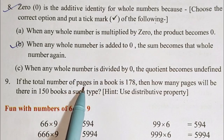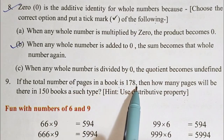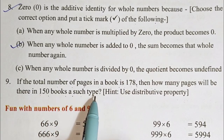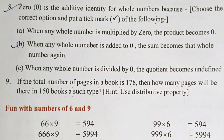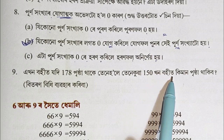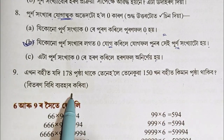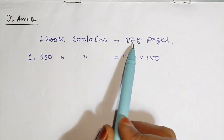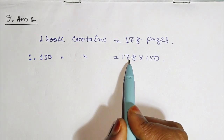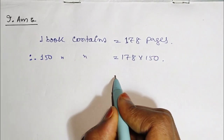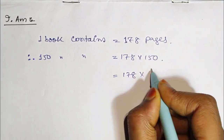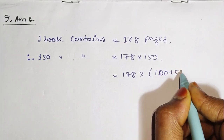Word problem: If the total number of pages in a book is 178, then how many pages will there be in 150 books? We need to find the total number of pages in 150 books, each having 178 pages.